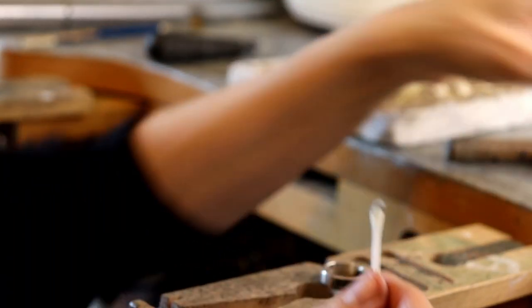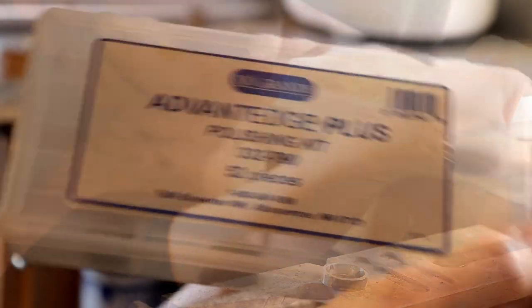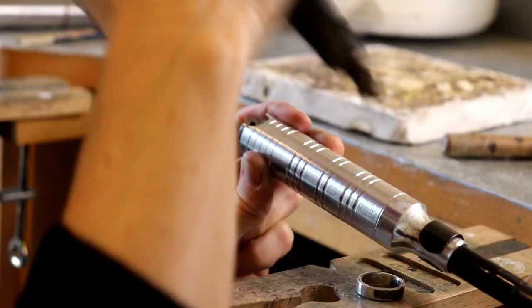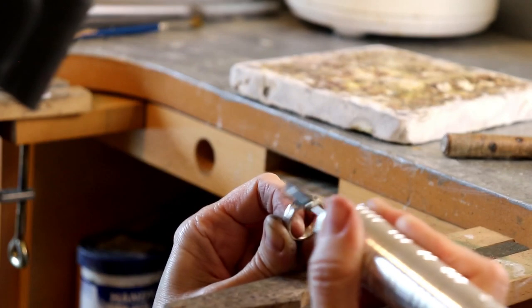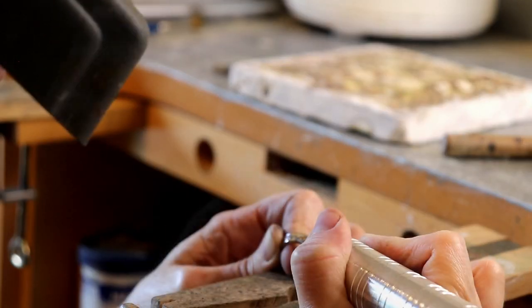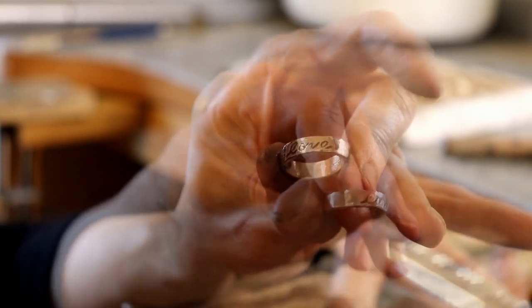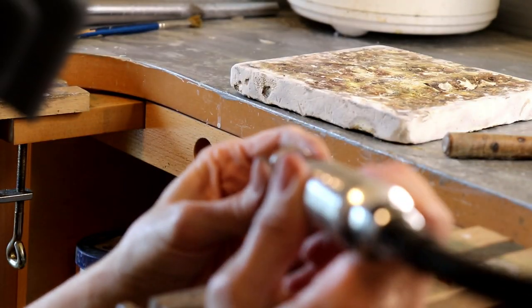Now I need a soft buffing wheel. Polishing kits like this, that's what I use. That should do the trick. Now I'm going to polish the interior a little bit.